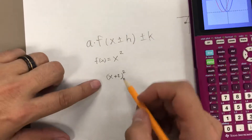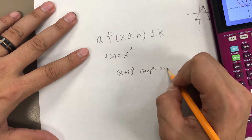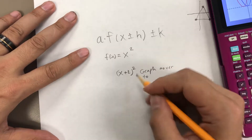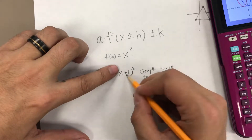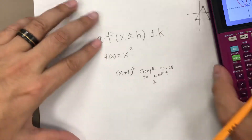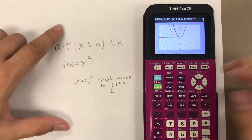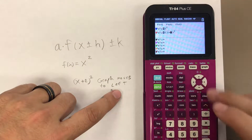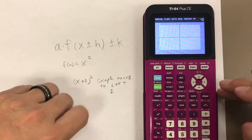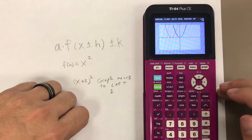This implies that whenever we add a number onto the x value inside the function, the graph shifts to the left by that many units. Let's prove the number can change — if we change that number to 4, it should move the graph to the left by 4. Sure enough, the entire graph moved over to the left by four full units.